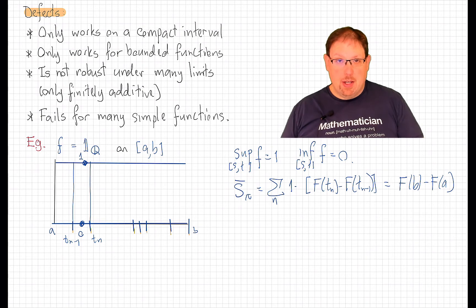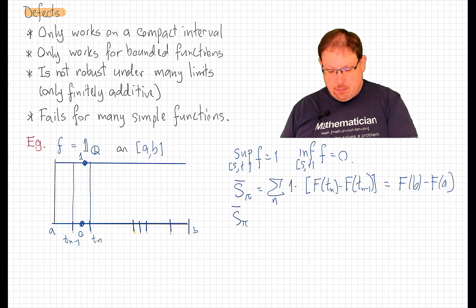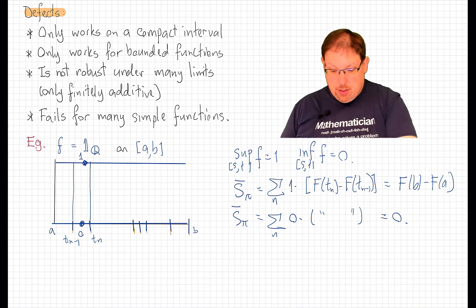All of the upper sums for any partition will just be the difference of f at the endpoints of the interval, whereas the lower sums will be the sum of 0 times the same, which of course will just be 0.